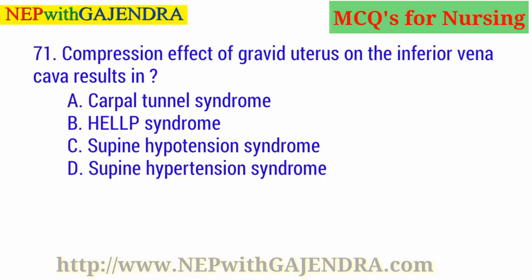Compression effect of a gravid uterus on the inferior vena cava results in: A. Carpal tunnel syndrome. B. HELLP syndrome. C. Supine hypotension syndrome. D. Supine hypotension syndrome. The right answer is C: Supine hypotension syndrome.